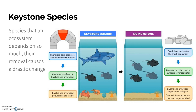A keystone species is a species in an ecosystem that is so vital to the function of that ecosystem that if you take it away, it causes a drastic change. It's very similar to building an arch — if you take away that top piece, the whole arch falls down. That top piece is called the keystone, which is why it gets that name.